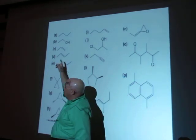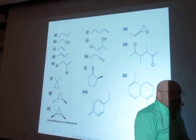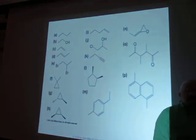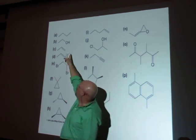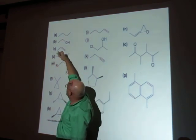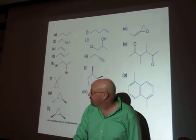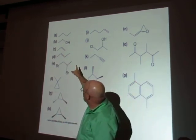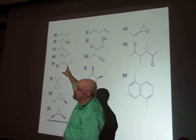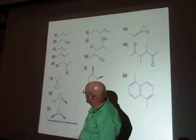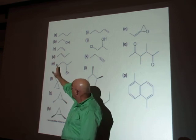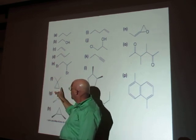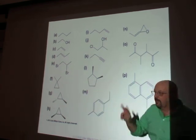Molecule D is pretty easy — it has a C2 axis of symmetry right through the middle. That gives two signals: the two methyls are equivalent, and the two CH hydrogens are equivalent. Molecule E: all the hydrogens are different, so it will have three signals. Molecule F — alpha — is straightforward: symmetry down the middle makes the two methyls equivalent and the two CH2s equivalent, and of course CH is different from CH3. So that's two signals.